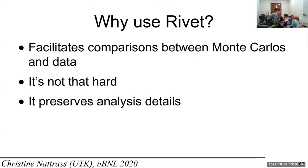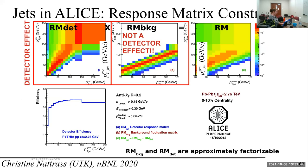You guys already know what Rivet is — it takes data from the HEPData database, reads in HepMC, you apply the analysis logic, and you get comparisons between data and models. Why should we use Rivet? It facilitates these comparisons. Once your Rivet analyses are finished and in the repository, anybody who ever wants to compare to those data can do so, and nobody has to repeat the work. Currently theorists have to write the analysis logic themselves, which means fewer comparisons get made. It's not that hard compared to many things we do, and it preserves the analysis details.